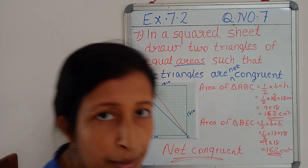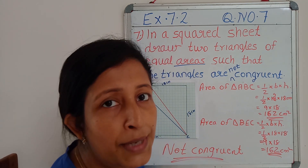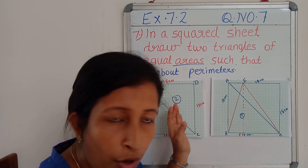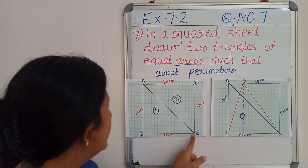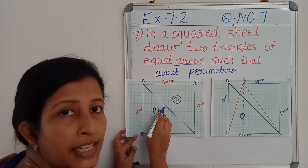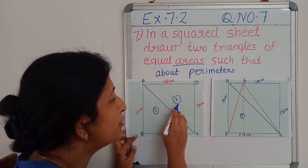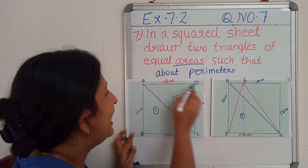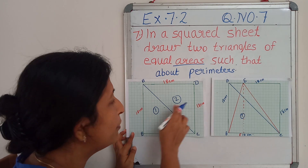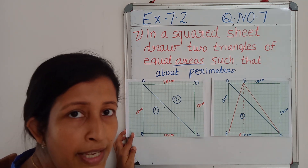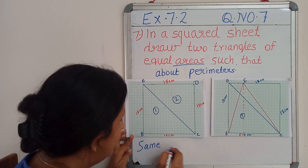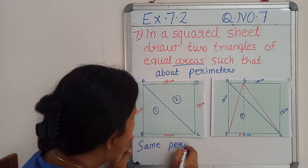This problem is having one more part. We have to think about the perimeters of both these triangles. In the first case, we are going to find the perimeter of triangle ABC — that is AB plus BC plus AC, which is 18 plus 18 plus the length of the diagonal. AC is the diagonal and it is common for both these triangles. So the perimeter will be the same.